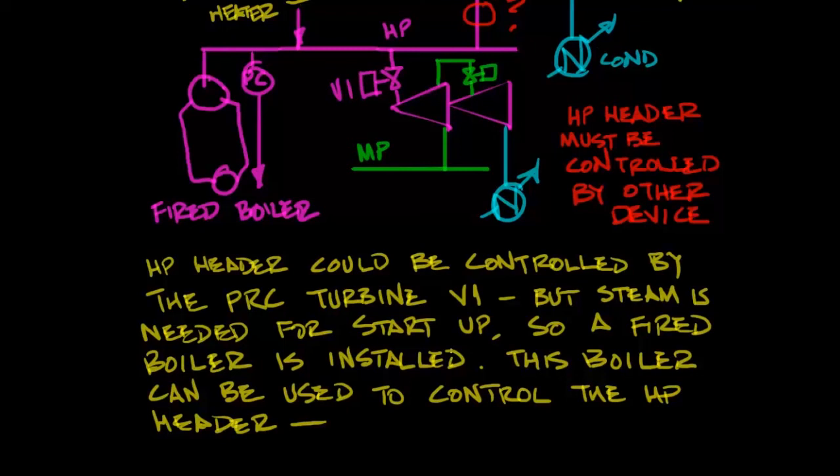In this case we show a fired boiler connected to the HP header that will provide that startup steam and then once you're running and making product you don't need that much steam from the fired heater but it can be used as a compensation for any swings in that HP header pressure. Since the CGC turbine is not controlling its extraction header and you've got a bunch of other users on that header pulling steam out of it you need something to supplement the steam if they're not in balance and that's what you would get from the fired heater.